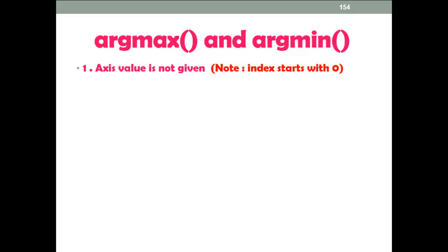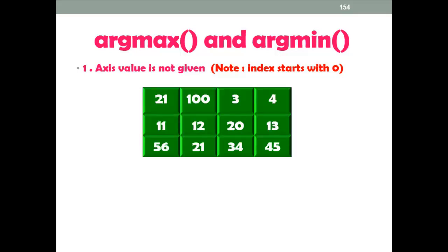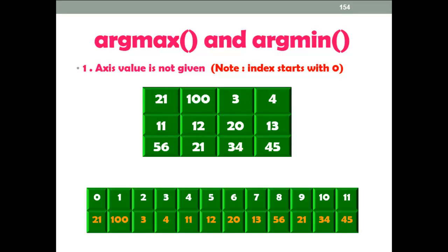Please note that the index starts with 0. Here you can see a 2D array. If axis value is not given, our array is converted into a 1D array. If you apply argmax on it without an axis value, the output is 1, because the maximum element is available at index number 1.